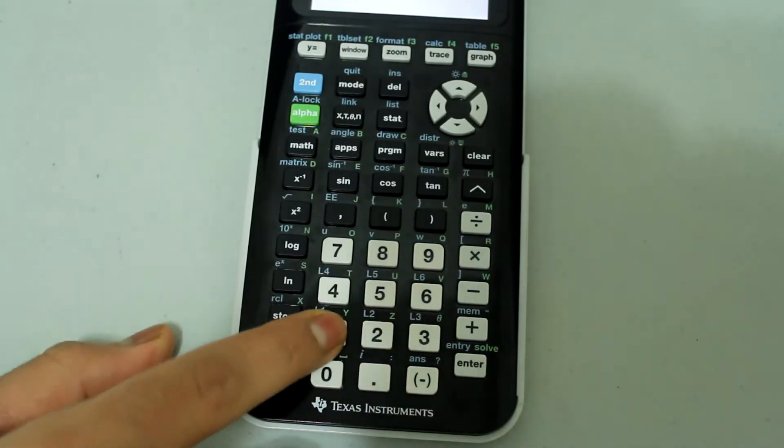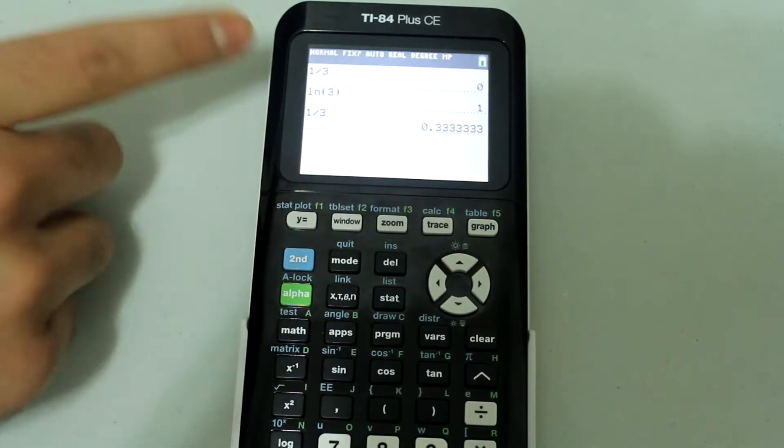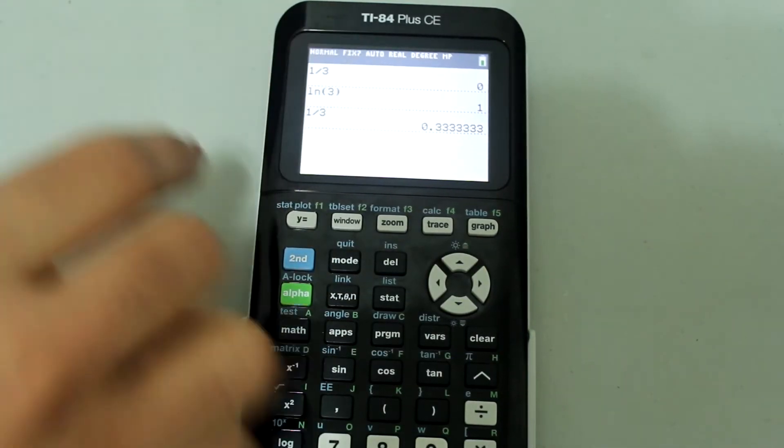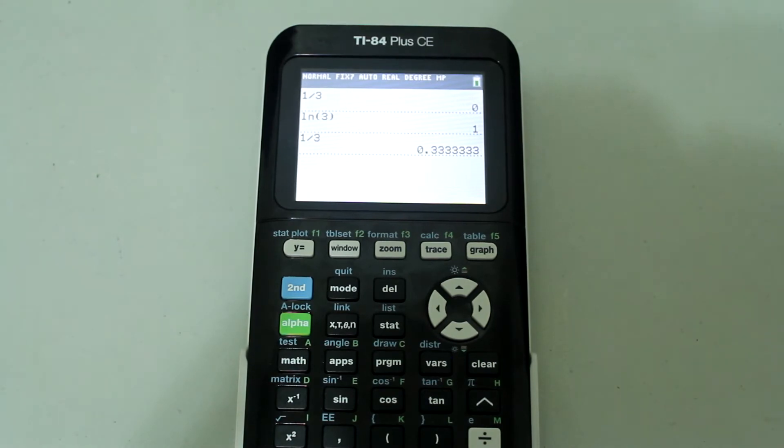This time try 1 divided by 3 again, and notice that we get a much longer answer. However, there's one downside of choosing a certain number of decimal places.